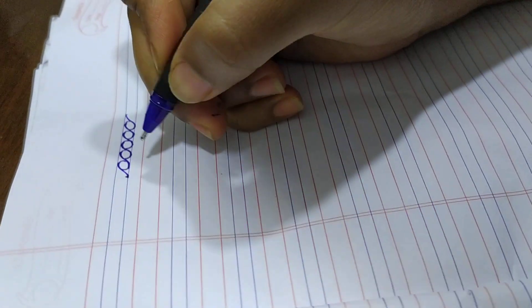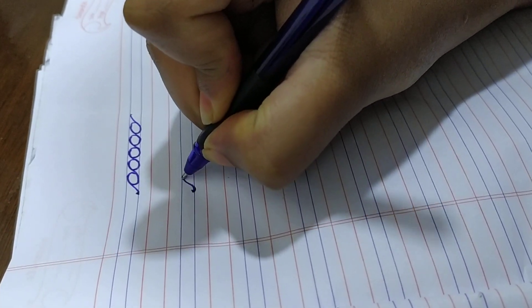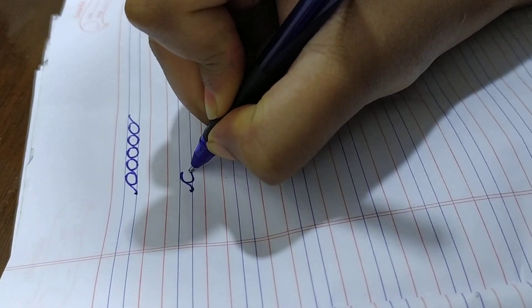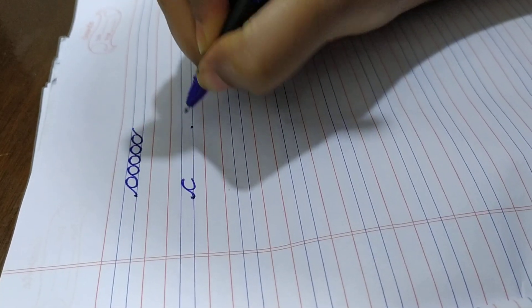Now come to the letter c. Make a dot, stroke, make a nice curve like this. It's small cursive c. Next letter is small cursive a.